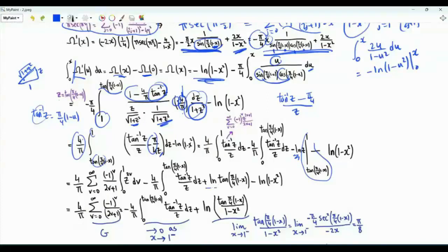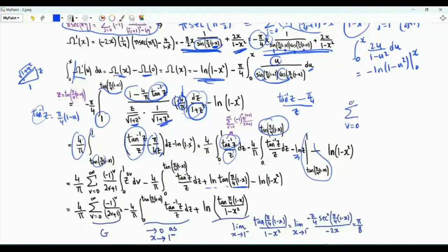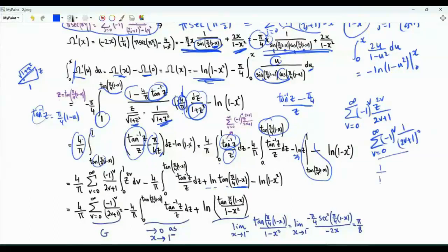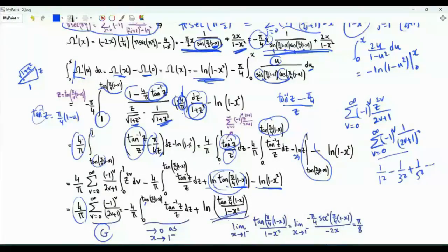Using the limits of integration we get plus ln tan of pi over 4 times 1 minus x. The integral of arctan z over z can be written as an integral from 0 to 1 minus an integral from 0 to tan of pi times 1 minus x over 4. The Taylor series of arctan z is the sum over non-negative integer v of minus 1 to the v times z to the 2v plus 1 over 2v plus 1; dividing by z and integrating term by term gives the sum of minus 1 to the v over 2v plus 1 squared, which is 1 minus 1 over 9 plus 1 over 25 and so on. This is Catalan's constant G, multiplied by 4 over pi. The logarithm minus ln 1 minus x squared can be combined with this logarithm term to give omega of x.